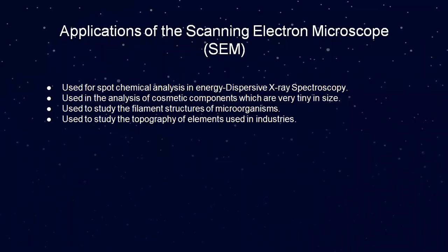Next, I will explain applications of the scanning electron microscope. First, it is used for spot chemical analysis in energy dispersive X-ray spectroscopy. Second, it is used in the analysis of cosmetic components which are very tiny in size. Third, it is used to study the filament structure of microorganisms. Fourth, it is used to study the topography of elements used in industry.